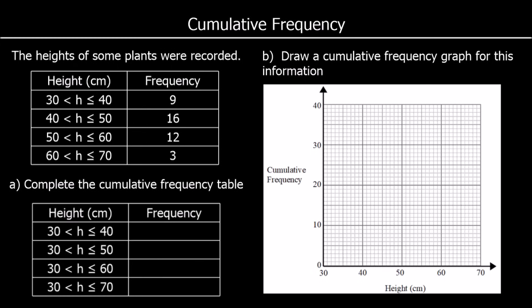In this example, we've got the heights of some plants, and we've got a normal frequency table here. So between 30 and 40 centimetres, there are 9 plants. There are 16 plants with a height between 40 and 50 centimetres, 12 plants between 50 and 60 centimetres, and 3 plants between 60 and 70 centimetres.